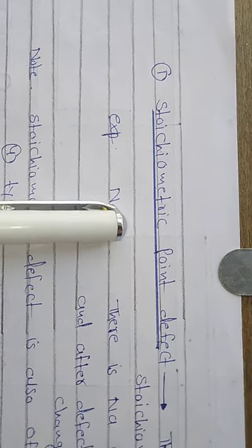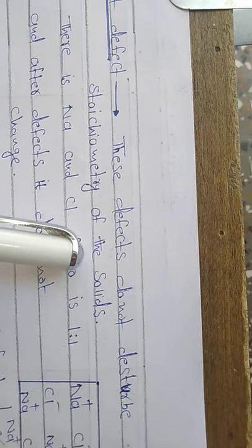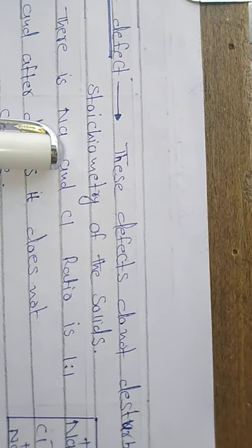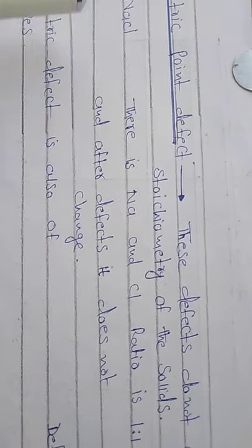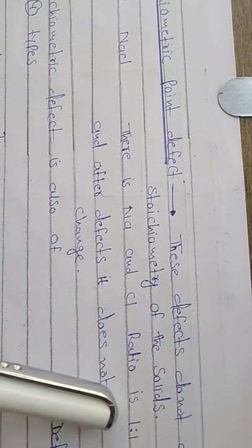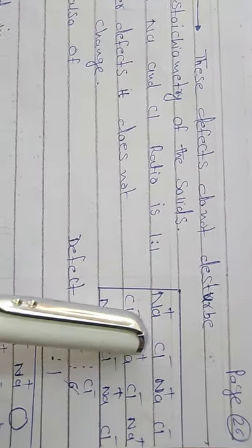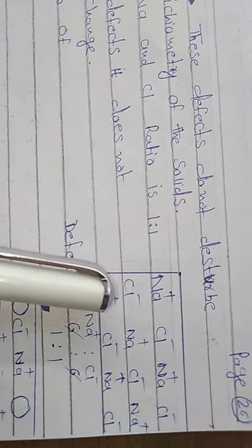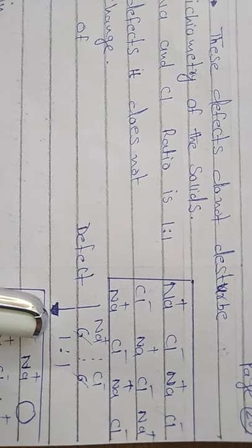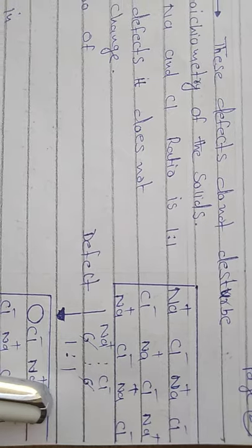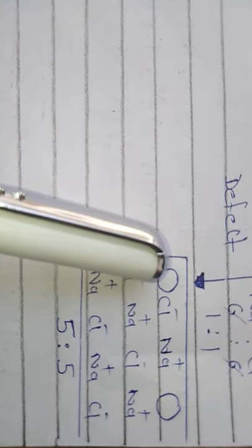Our first type is the stoichiometric point defect. This defect does not disturb the stoichiometry of the solid. For example, in NaCl the Na:Cl ratio is 1:1, and after the defect it does not change. In a perfect crystal with three layers we count 6 Na and 6 Cl; in the defective crystal we have 5 Na and 5 Cl.